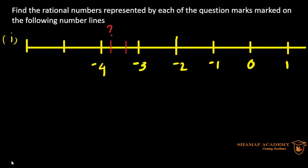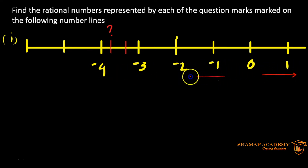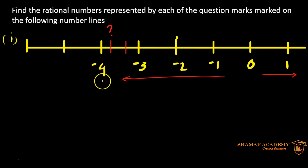Hello everyone, I hope you all are doing fine and safe. Today we have to find the rational numbers represented by each of the question marks on the following number lines. We have a number line with positive numbers from zero going right, and this number line going towards the negative numbers: negative 1, negative 2, negative 3, and negative 4.